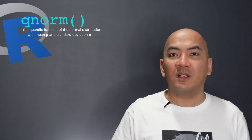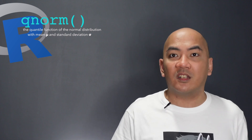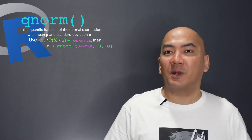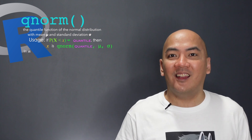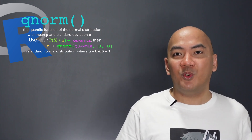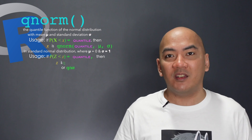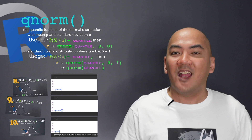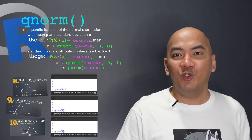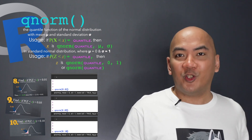On the other hand, if you're asked to find Z given a cumulative probability, use the qnorm function, as it is the quantile function of the normal distribution with mean mu and standard deviation sigma. It gives the value of X given the cumulative probability, the mean mu, and standard deviation sigma. For a standard normal distribution, just type qnorm(cumulative probability, 0, 1), or simply qnorm(cumulative probability).